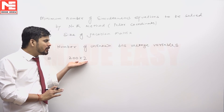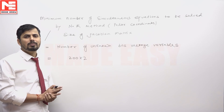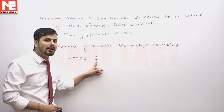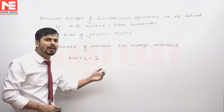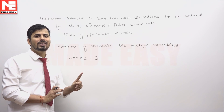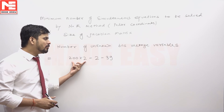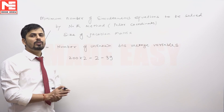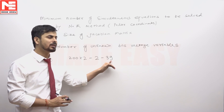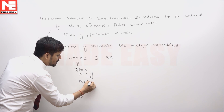Out of the 40 generator buses, one must be taken as the slack bus. At the slack bus, both voltage variables are known, so we subtract 2. The remaining 39 are PV buses, and at each PV bus one voltage variable (|V|) is known, so we subtract 39. Therefore, the unknown bus voltage variables = 200 × 2 − 2 − 39.